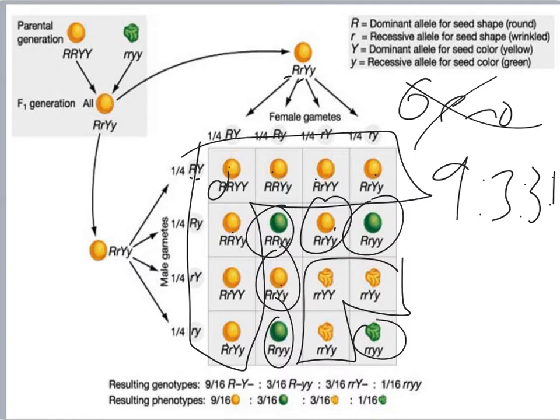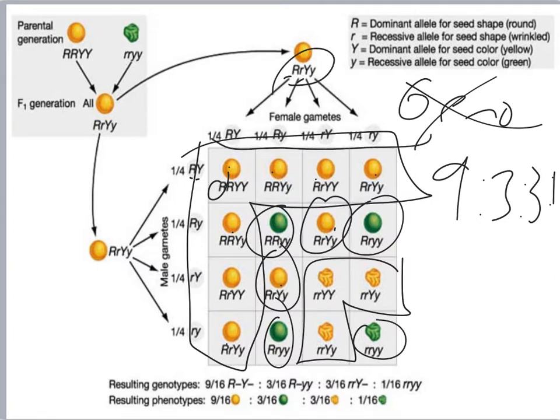So all I've really done is done a dihybrid cross following Mendel's law of independent assortment and segregation, and in doing so, I've created this large Punnett square. Notice when you do it like this, it's all about the setup. The setup's what matters. But if I can match all the possible gametes and set them up on the outside, I just combine them together.